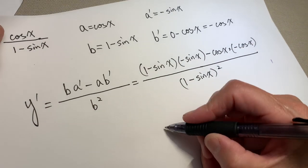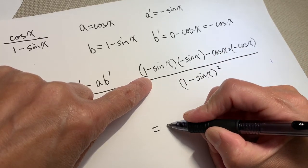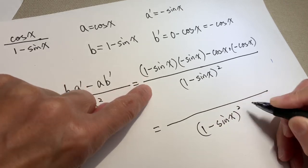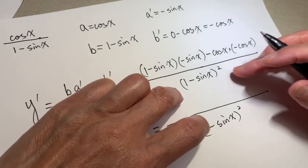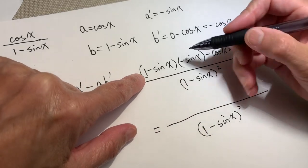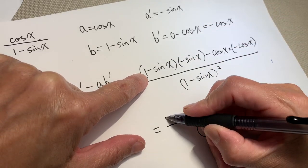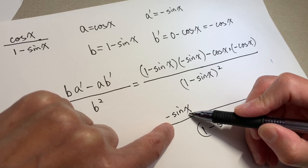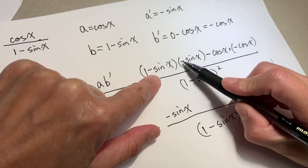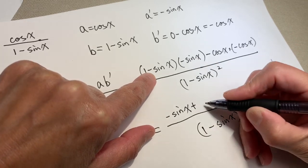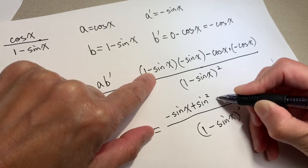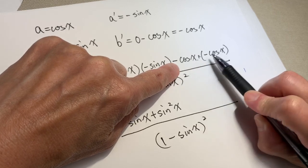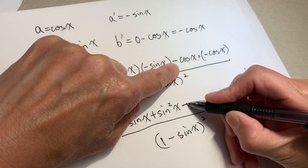Now we need to clean up a little bit. The denominator stays as (1 minus sine x) squared. We multiply in the numerator: 1 times negative sine x is negative sine x, and negative sine x times negative sine x is positive sine squared of x. And here we have negative cosine x times negative cosine x, so it's positive.